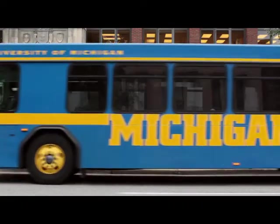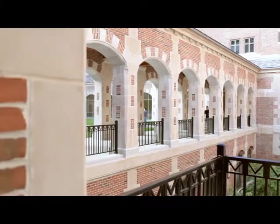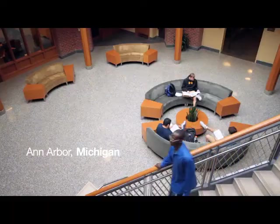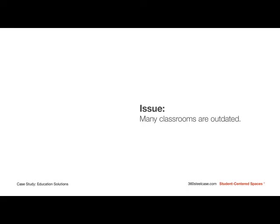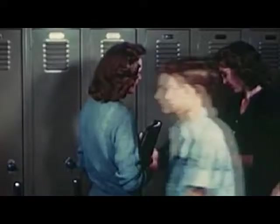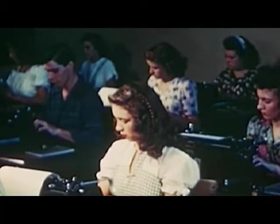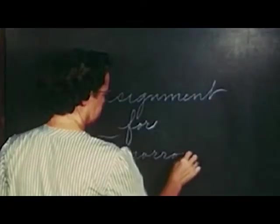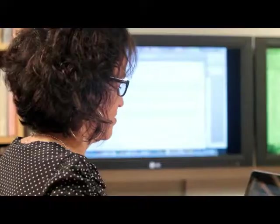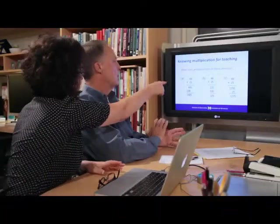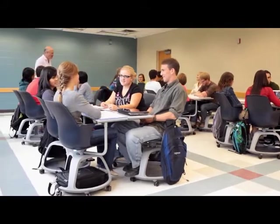Learning occurs everywhere and we haven't thought a lot about how to design the environments in which human beings are supportive of the fact that they're likely to be engaged in learning activities. A lot of classrooms are designed to support a kind of teaching that has gone on for hundreds of years — a teacher at the front of a group of students all facing forward, whose job is mostly to listen. Many theorists think schooling would be much better if learners were much more actively engaged in the work.